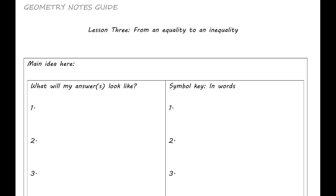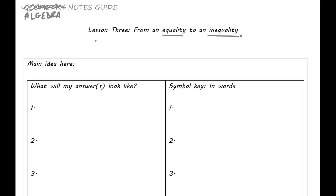Welcome back — it's time for week 3, and not in geometry but in Algebra 1. Go ahead and change the top of your paper. Everybody makes mistakes — I totally messed that up, so this is algebra. This is our algebra notes guide for week 3, and we're going to go from an equality to an inequality. For those of you who are English buffs, you know that prefix is almost like 'un' — it undoes something.